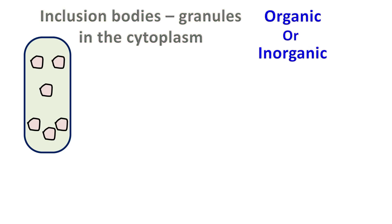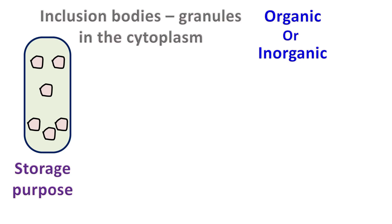The inclusion bodies can be seen as granules present in the cytoplasm when observed through a microscope. They are usually used for storage purposes, including storage of carbon compounds, inorganic molecules, and energy.